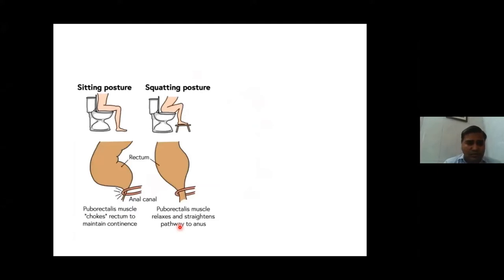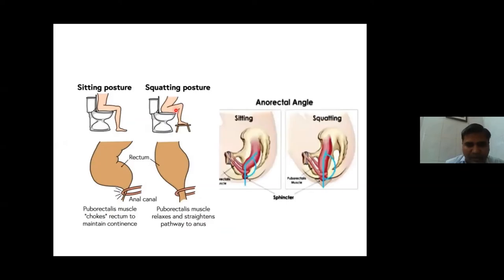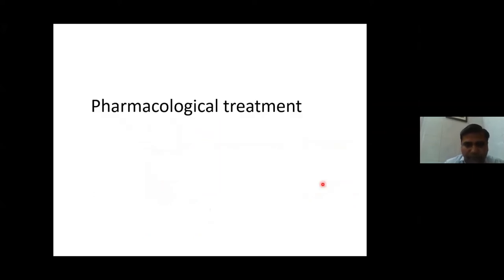Sitting posture during defecation matters. On a western commode, we can advise the patient to use a footstool to raise their knees. The puborectalis muscle normally chokes the rectum to maintain continence, but when the patient is in a squatting position — with the help of a footstool — the puborectalis muscle relaxes and straightens the pathway. Indian commodes are better suited for easier defecation because the anorectal angle increases in the squatting position.